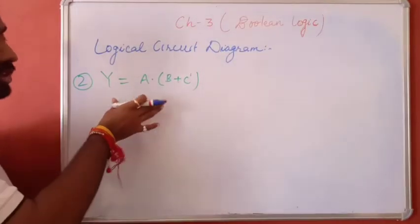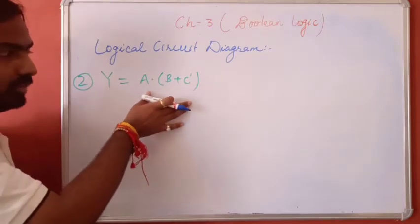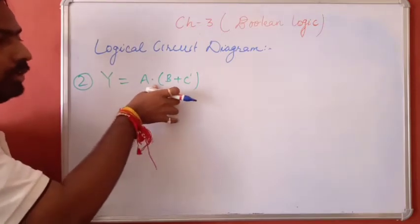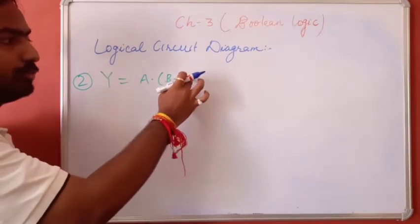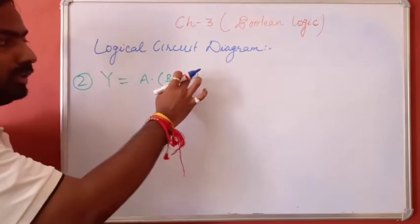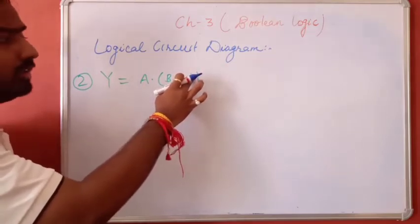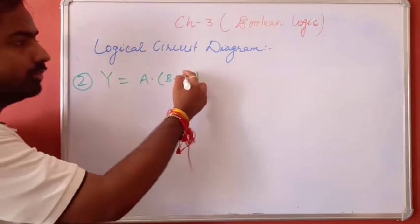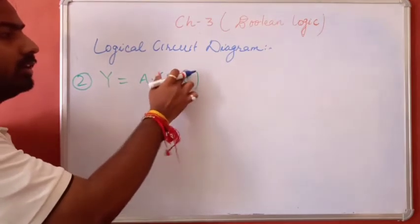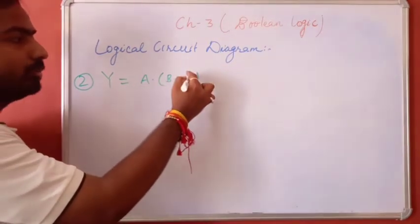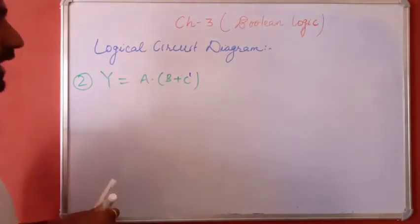Now see the second question. You have to draw the logical circuit diagram of this function: A into (B plus C̄), with a bar over the whole expression. Both notations represent the inverse operation.